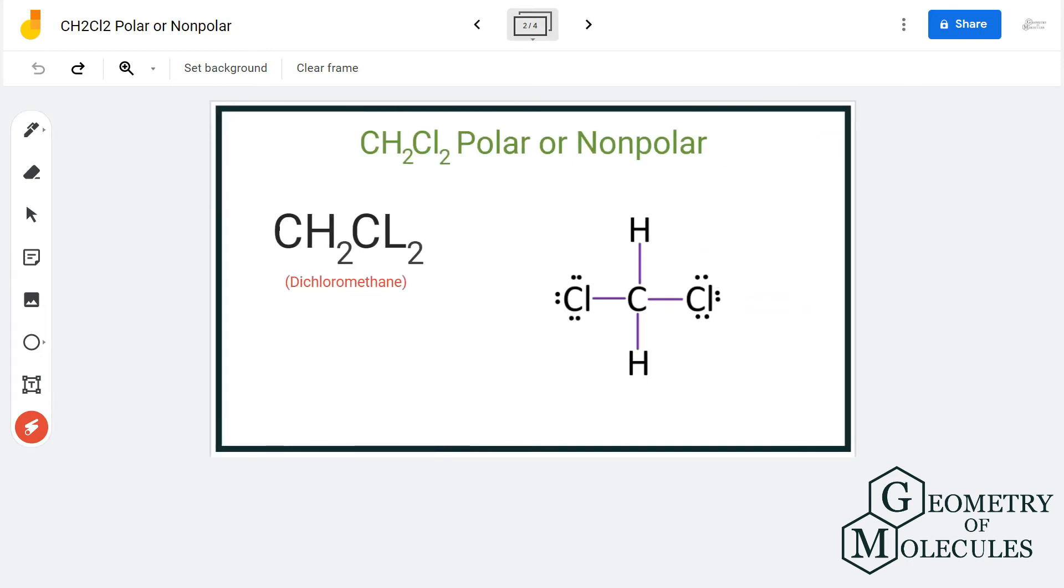Chlorine will have partial negative charges, which means there is a formation of poles in this molecule, making CH2Cl2 a polar molecule.